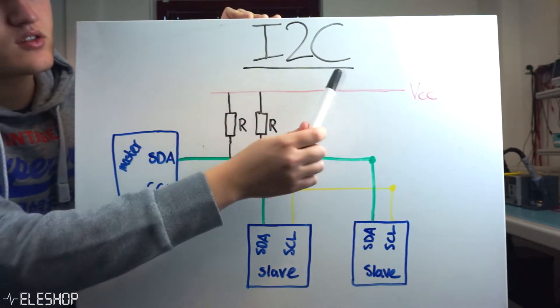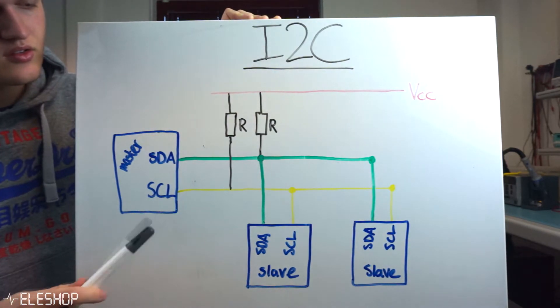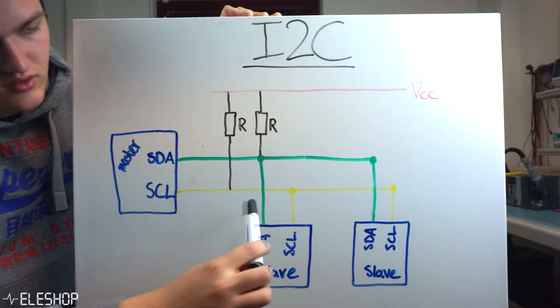Now let's discuss I2C. I2C, or inter-integrated circuit, uses only two lines for communication between modules.